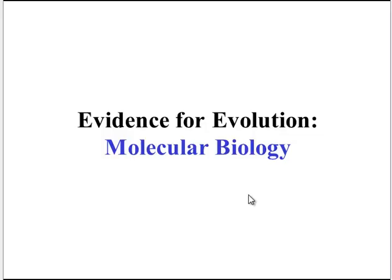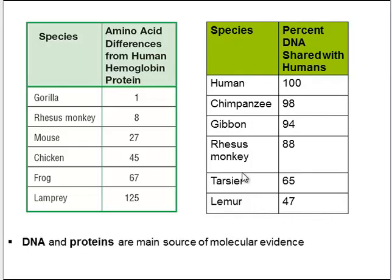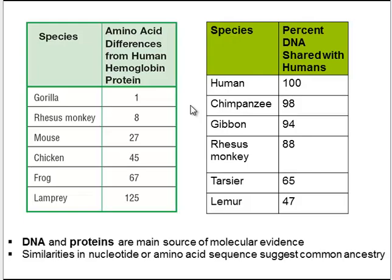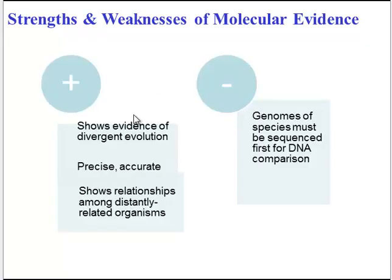Perhaps our most powerful evidence for evolution is molecular biology. By comparing amino acid sequences in proteins or nucleotide sequences in DNA, we get a powerful type of homology — the more similar the sequence, the more closely related the organisms. This shows evidence of common ancestry via divergent evolution. It's more precise and accurate than looking at body structures, and we can use it to show relationships between distantly related organisms. However, you have to have the evidence in the first place in order to analyze it.